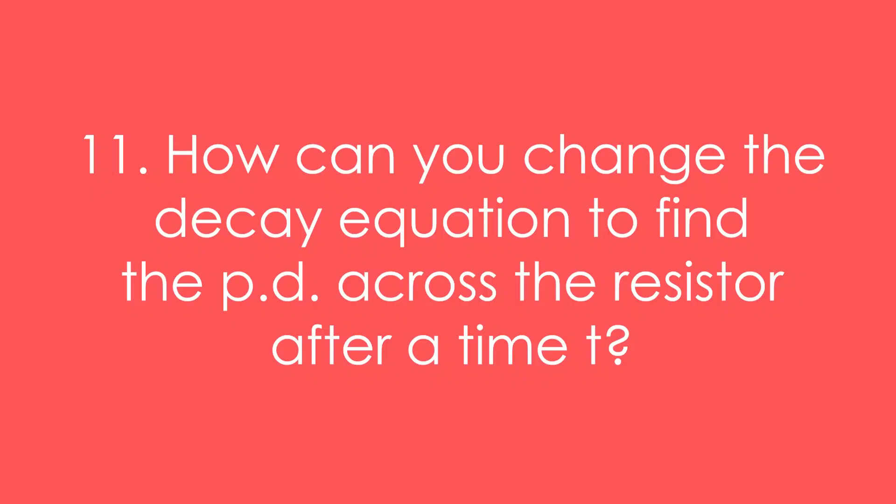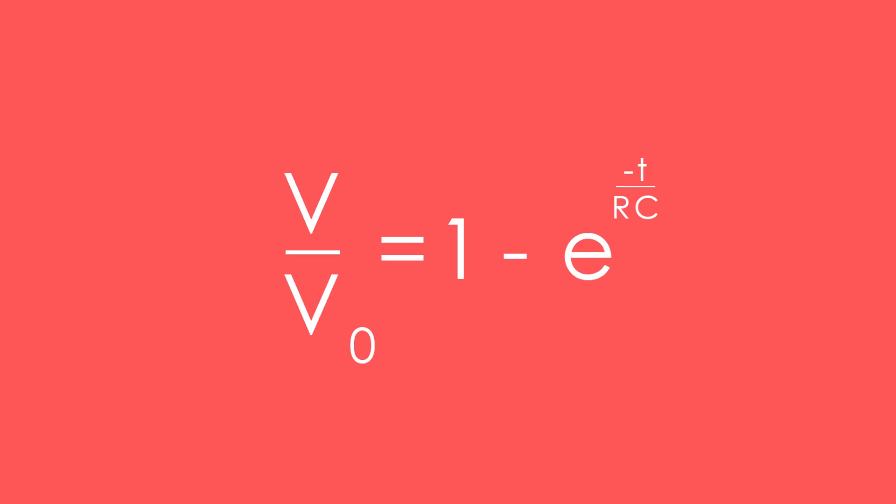Eleven, how can you change the decay equation to find the PD across the resistor after a time T? We just do one take away e to the minus T over RC. Because like we said, that total voltage needs to be shared. So if it's 37% on the capacitor, 63% for the resistor.